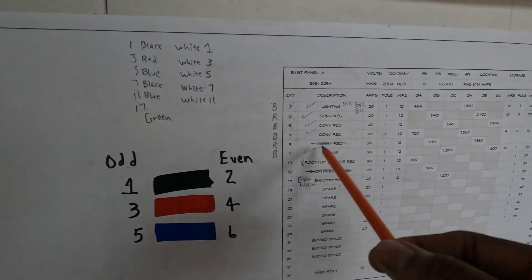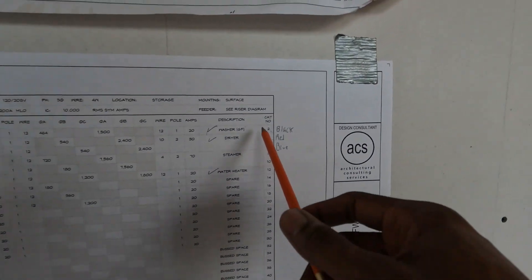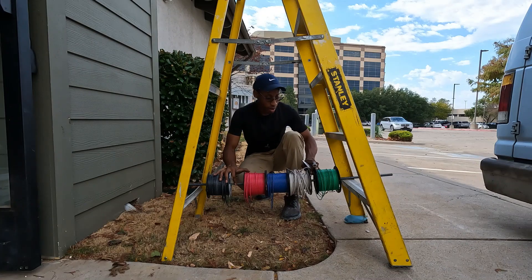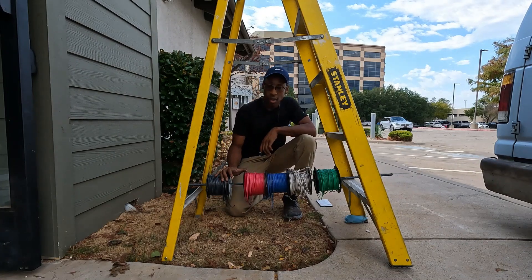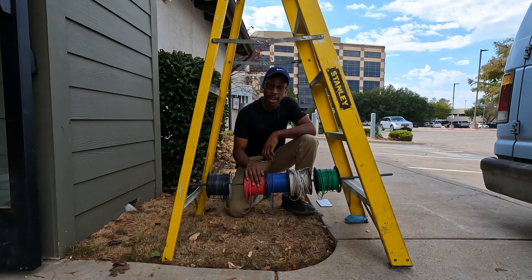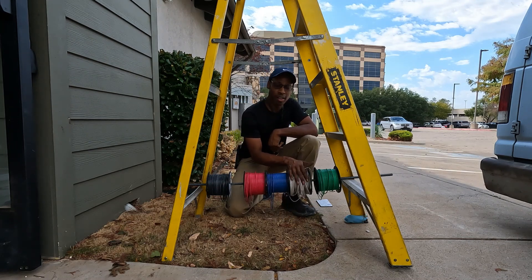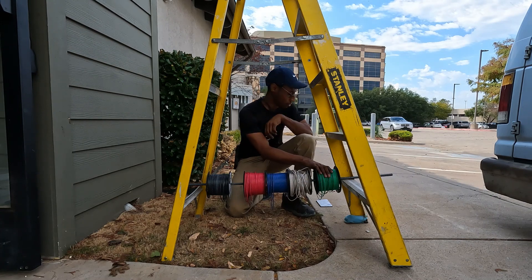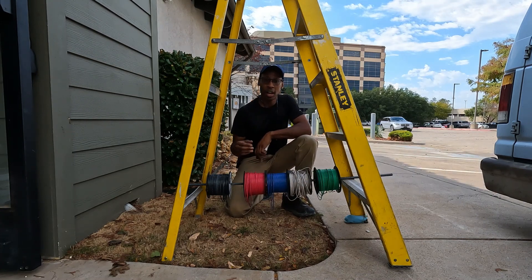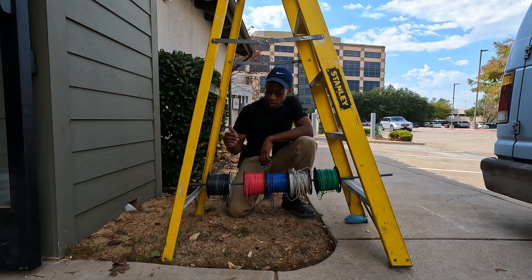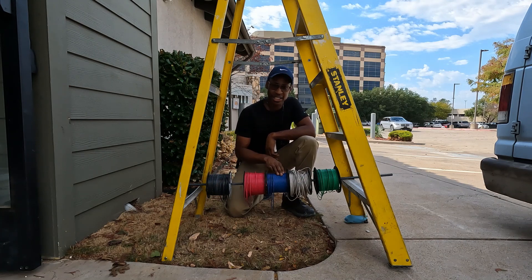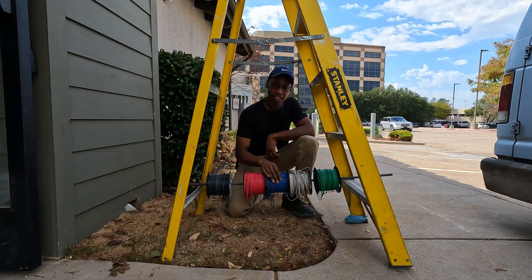Odd numbers are on the left side of the panel and even numbers are on the right side. We have our wire reel set up with black, red, blue, white, and green which is ground. So on the even side you'd label two, four, and six; on the odd side you'd label one, three, and five.